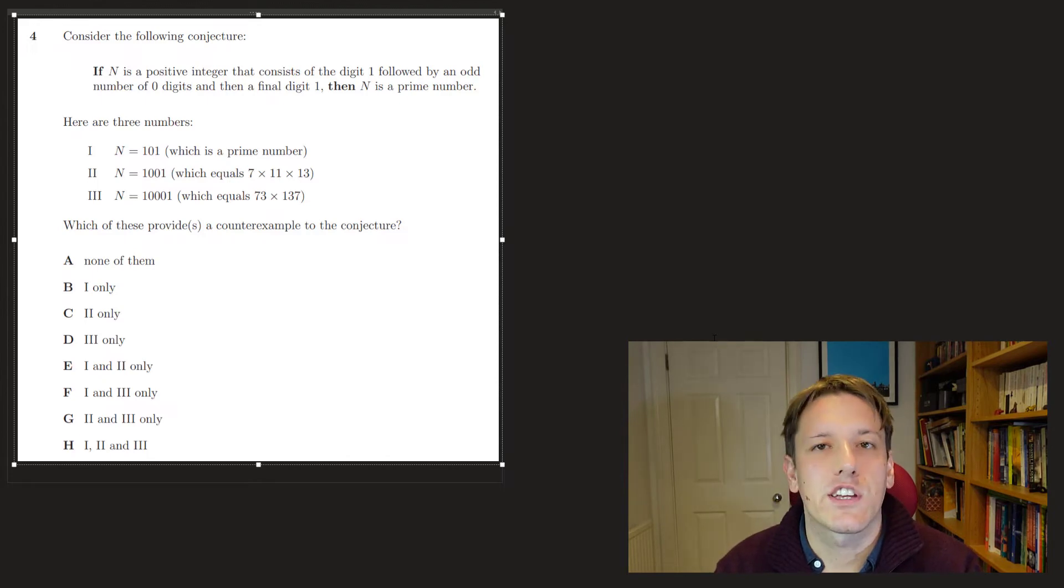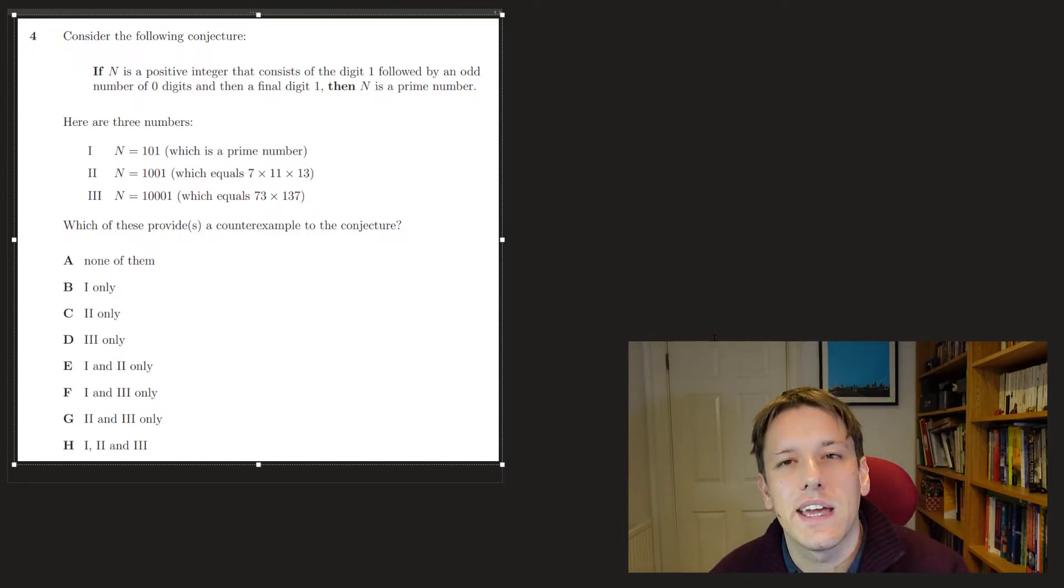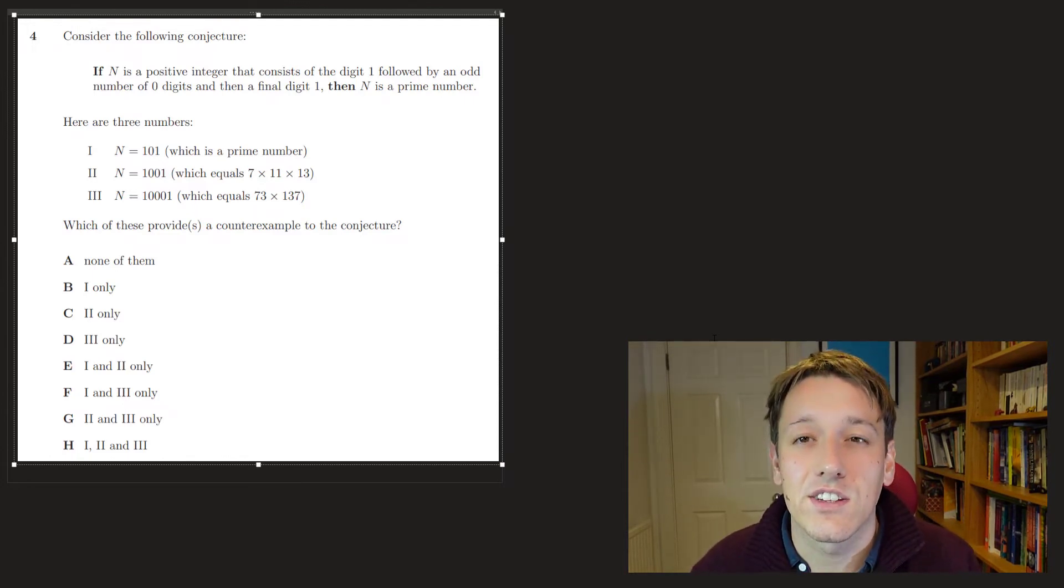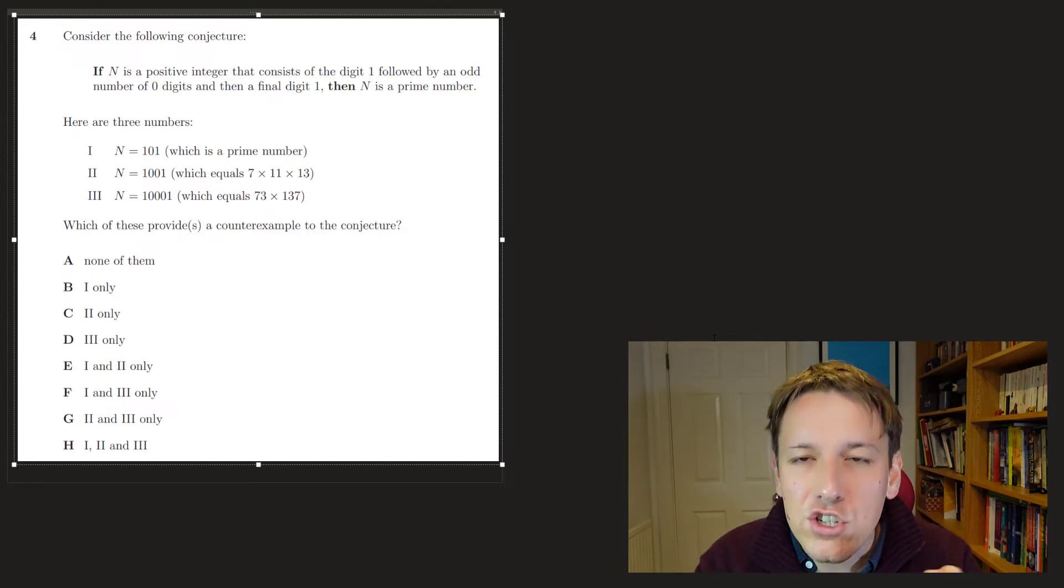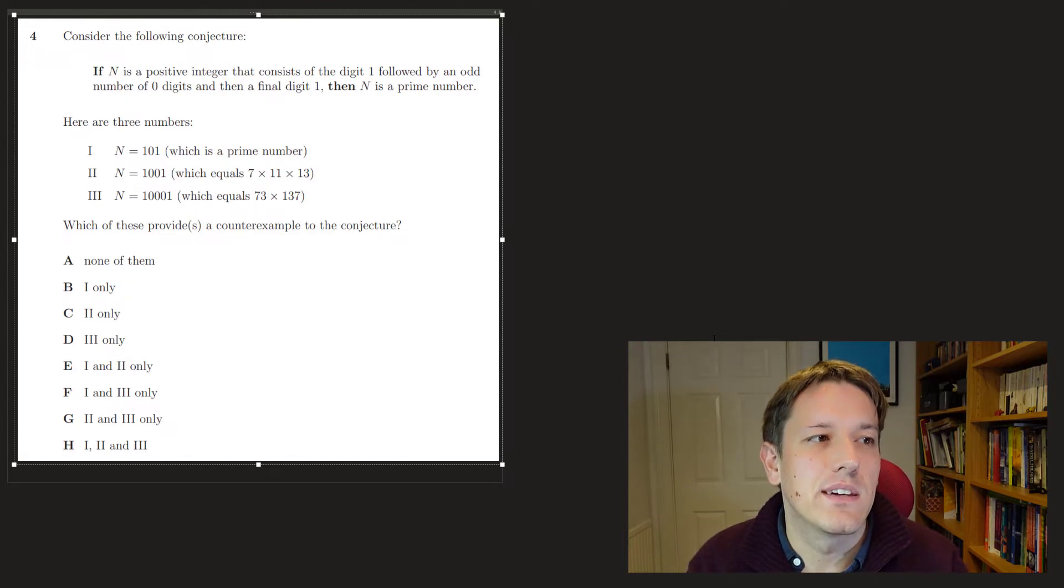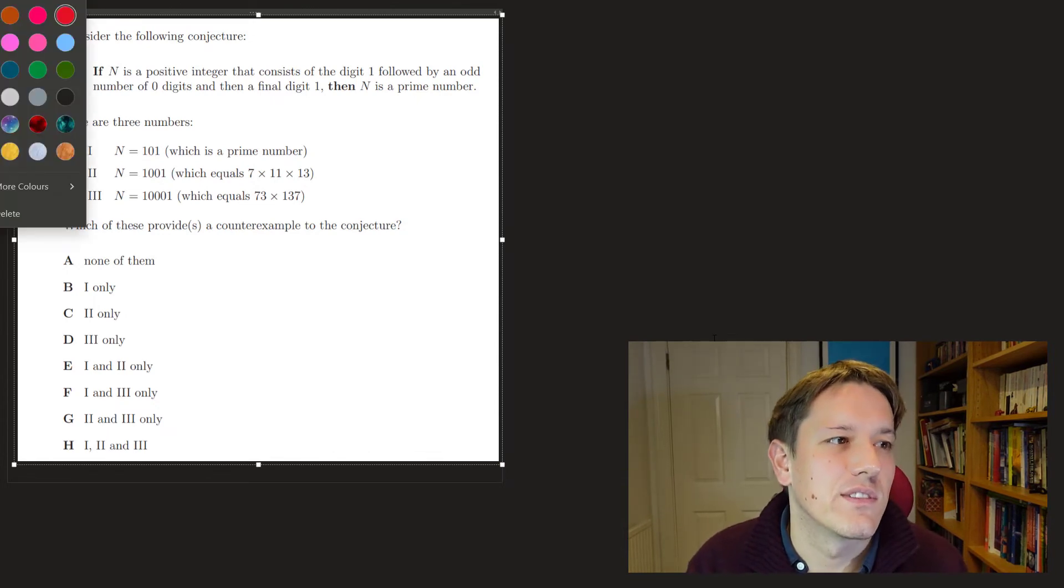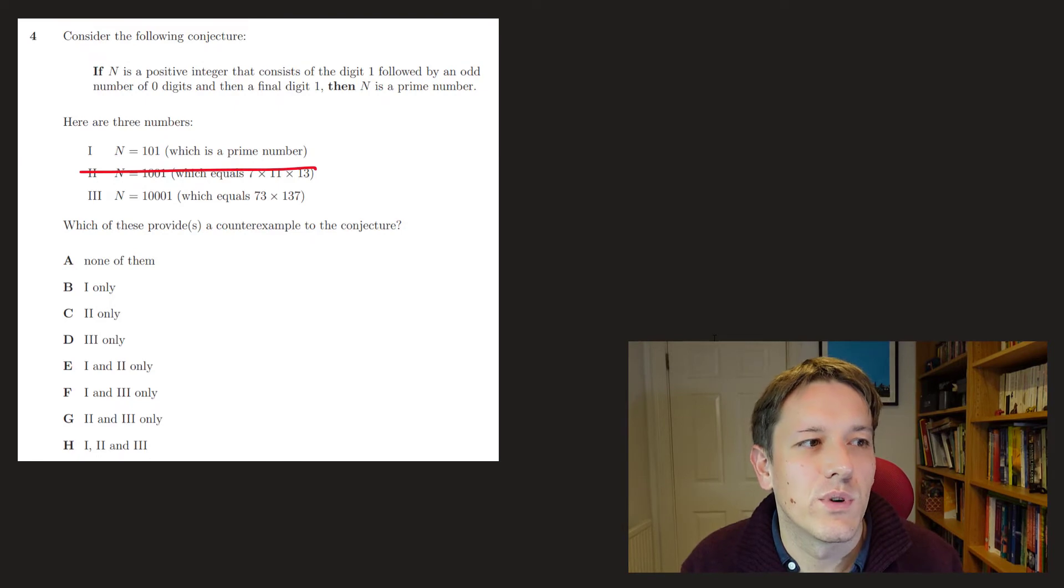In question 4, it says, consider the following conjecture. If n is a positive integer that consists of the digit 1 followed by an odd number of 0 digits and then a final digit 1, then n is a prime number. They've given us three numbers here, and we want to know which of them provide a counterexample to the conjecture. Now, to be a counterexample for the conjecture, it has to be an example that shows that the conjecture is false. So it must satisfy all of the premises for the conjecture, all of the conditions for the conjecture, but it mustn't satisfy the final statement, the outcome of the conjecture. So to be a counterexample, the number n would have to be a positive integer consisting of the digit 1 followed by an odd number of 0 digits. So that automatically rules out number 2, because 1001 has an even number of 0 digits in the middle. So it can't be a counterexample.